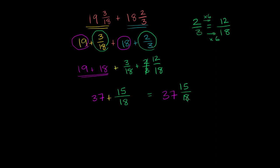Both the numerator and the denominator are divisible by 3. So let's divide them both by 3. We're not changing the value because we're doing the same thing to the numerator and the denominator. And so this gives us 37, but the numerator is now 5 and the denominator is now 6. So we get 37 and 5/6. And we're done.